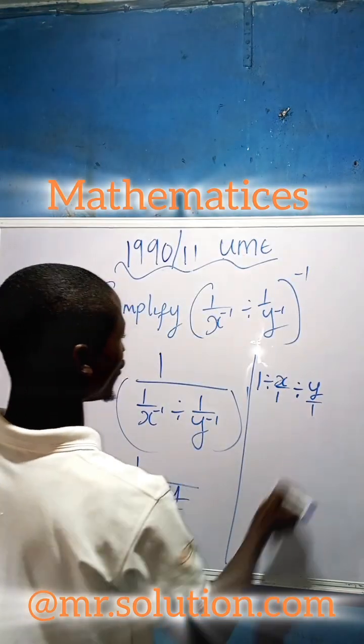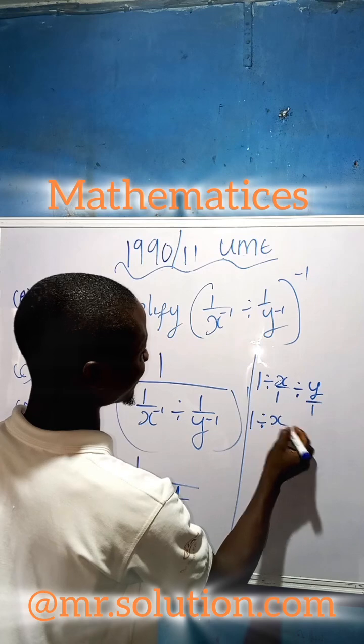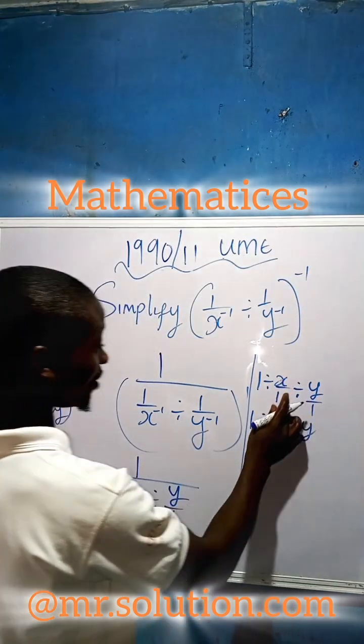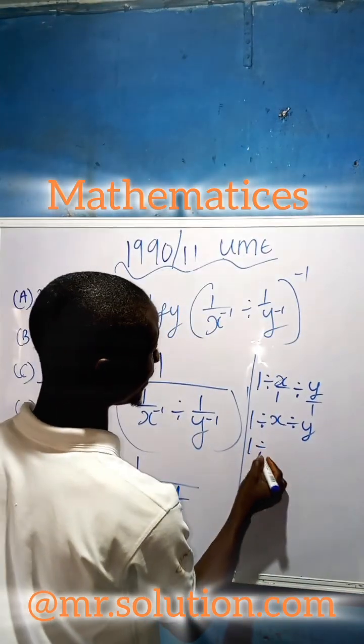Which gives us one divided by—x divided by one is x, y over one is y—which gives us one divided by x over y.